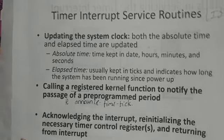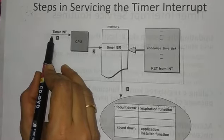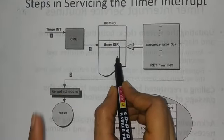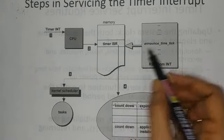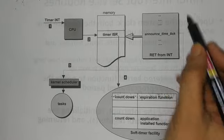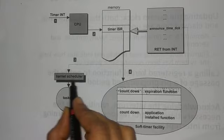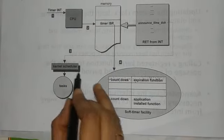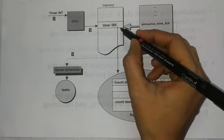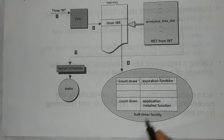These are the three steps for the timer interrupt service routine — the steps in servicing the timer interrupt. First, any device interrupts the CPU. Next, these signals pass to memory and the suspended process is moved to memory. Afterwards, the kernel in the OS — in Unix operating systems the kernel governs the total system — announces the time tick. The announced time tick is taken from the kernel scheduler or task. After completion, the timer ISR is initialized and maintained by the soft timer function.